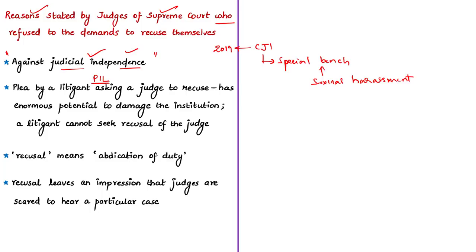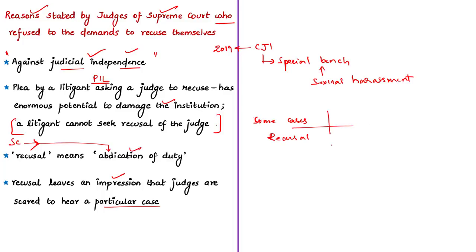The Chief Justice was asked to recuse because he had made observations against an Assam government proposal to conditionally release and monitor those declared foreigners held in detention centers for more than five years. However, the Chief Justice said the plea asking him to recuse had enormous potential to damage the institution. He also observed that a litigant cannot seek recusal of a judge. In one case, the Supreme Court stated that recusal means abdication of duty, and some judges stated that recusal means leaving an impression that the judge was scared to hear that case.